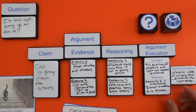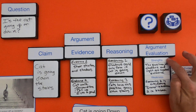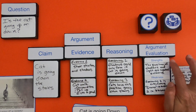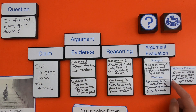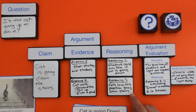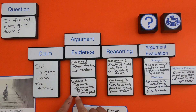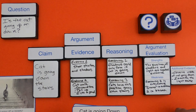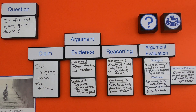Evaluating student one's argument: the strength is the discussion of stair structure and shadows — the position of the light is very important evidence. As a weakness, reasoning two — 'this is how cats look going downstairs' — seems weak and subjective. Also, when they say the eyes are on the 'ground,' that word is biased because it assumes the cat is going downstairs. That's how you evaluate an argument.